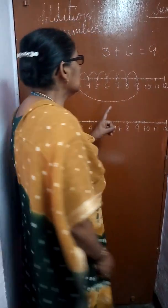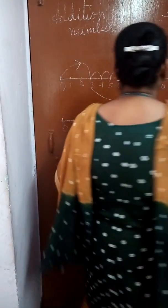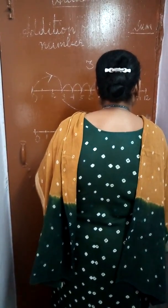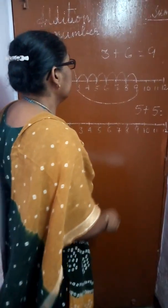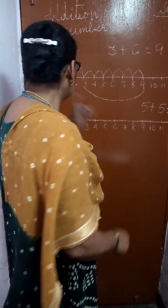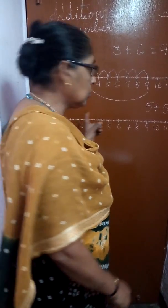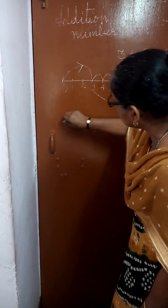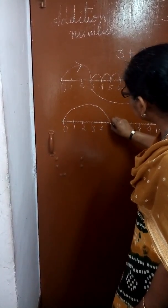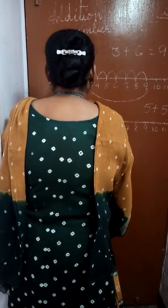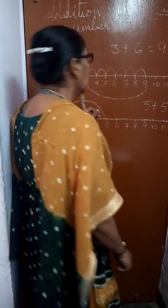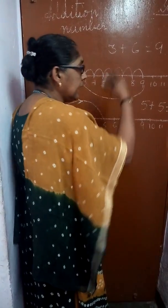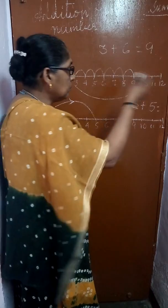Now I am going to show you another number: 5 plus 5. What is the answer? Now what you have to do? You have to go from 0 to 5 — 0 to 5 you have to make a jump, and you have to show the forward counting arrow mark.